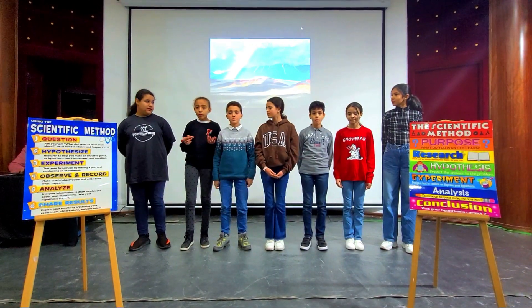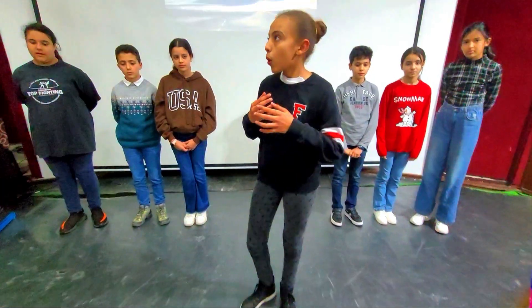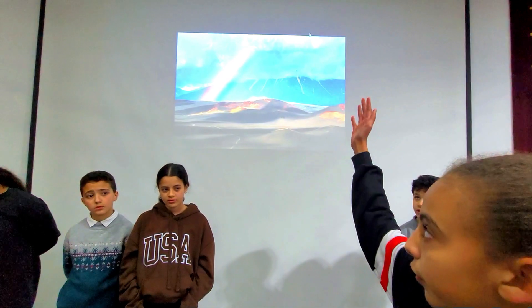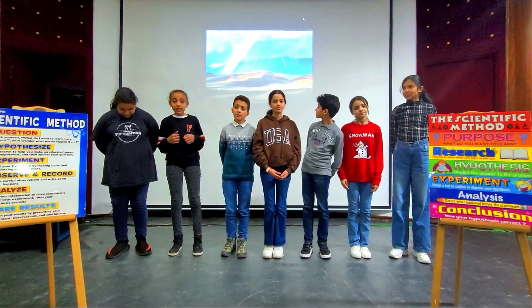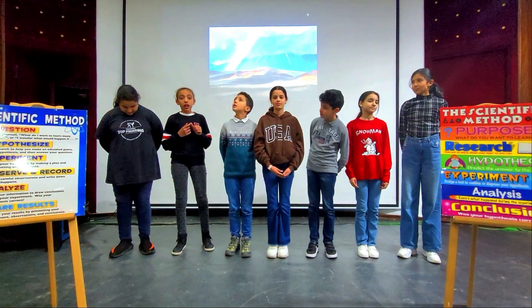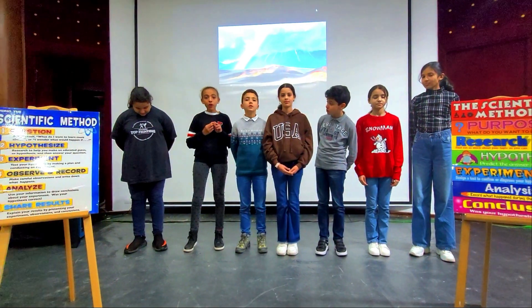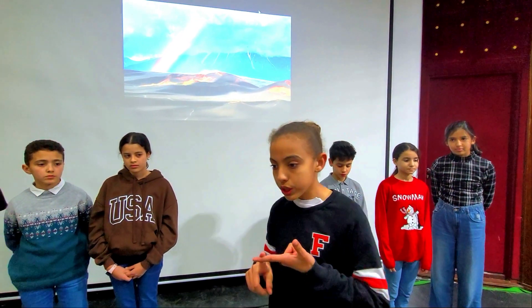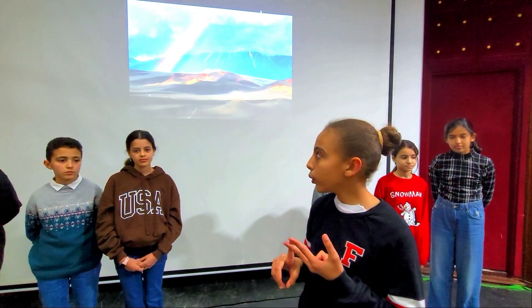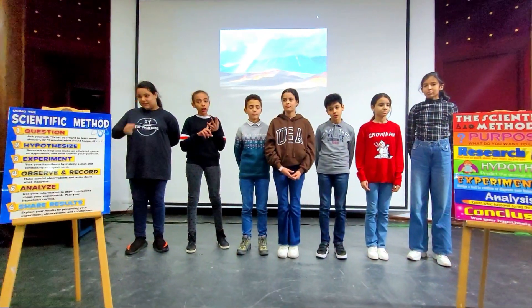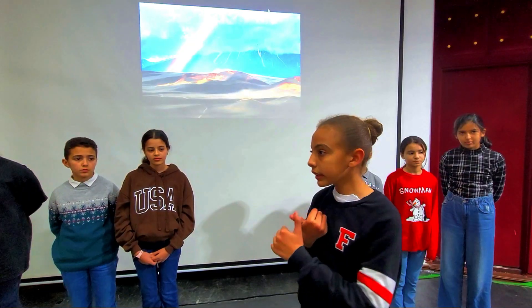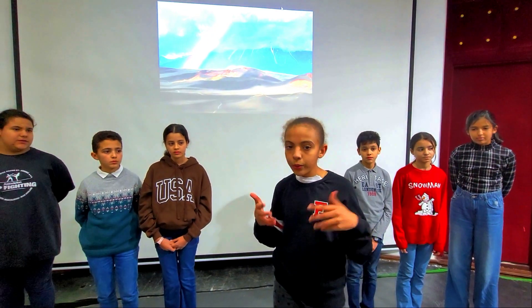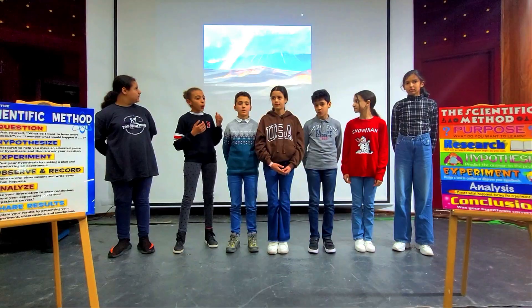Do you know rainbows? Rainbows are beautiful semicircles of color in the sky. The seven colors of the rainbow are red, orange, yellow, green, blue, indigo and violet. We get rainbows when it is raining and sunny at the same time.